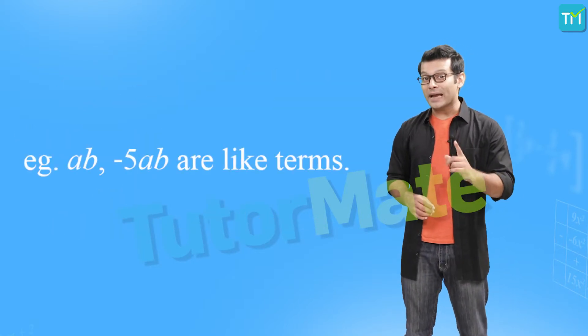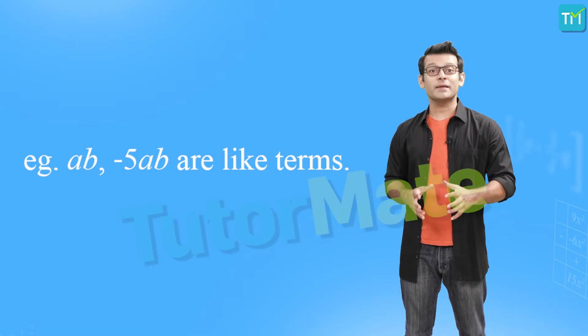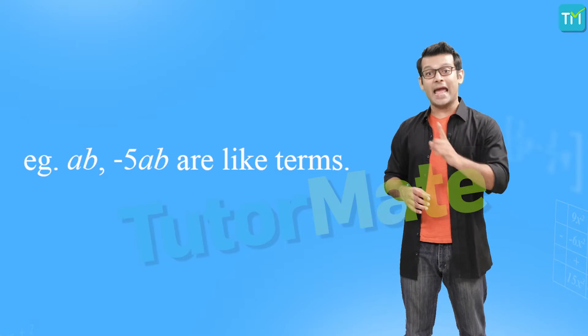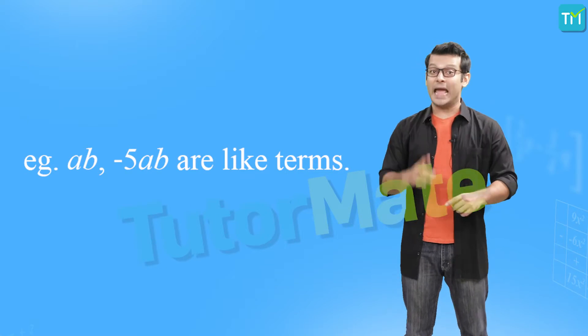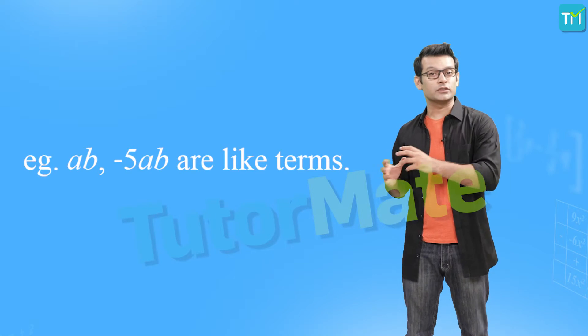So in a nutshell, for two algebraic terms to be like terms they should have the same variables and those variables should be raised to the same degrees in both terms. For example, ab and minus 5ab are like terms because both have the same variables a and b raised to the same powers. Now that we have an idea about terms, expressions, variables and coefficients, let's put our knowledge to the test.